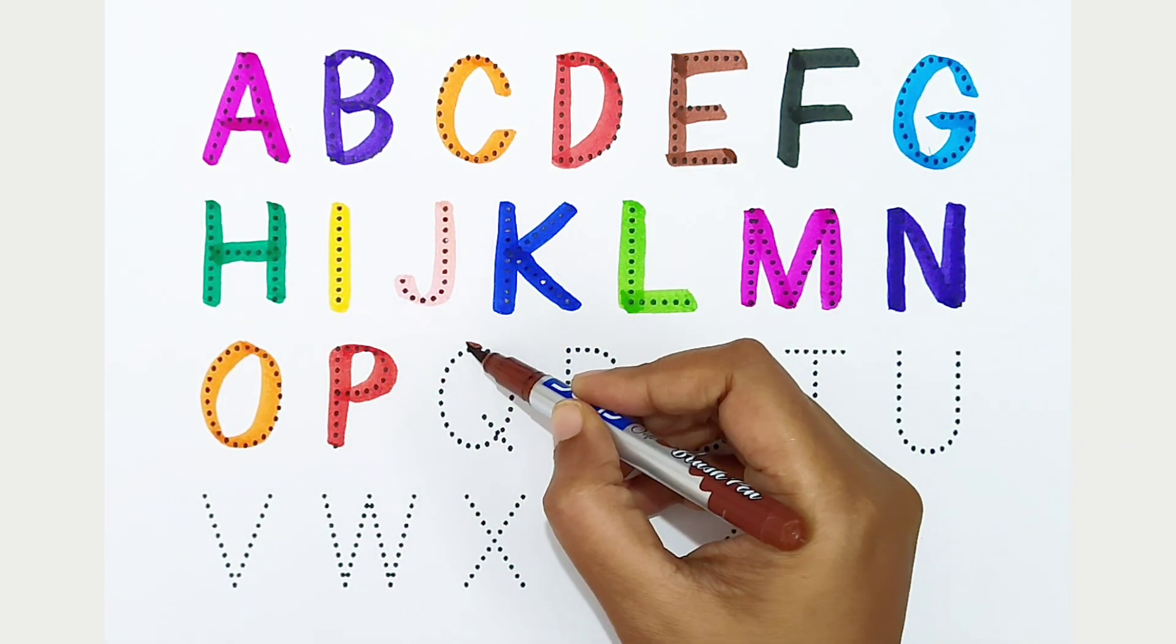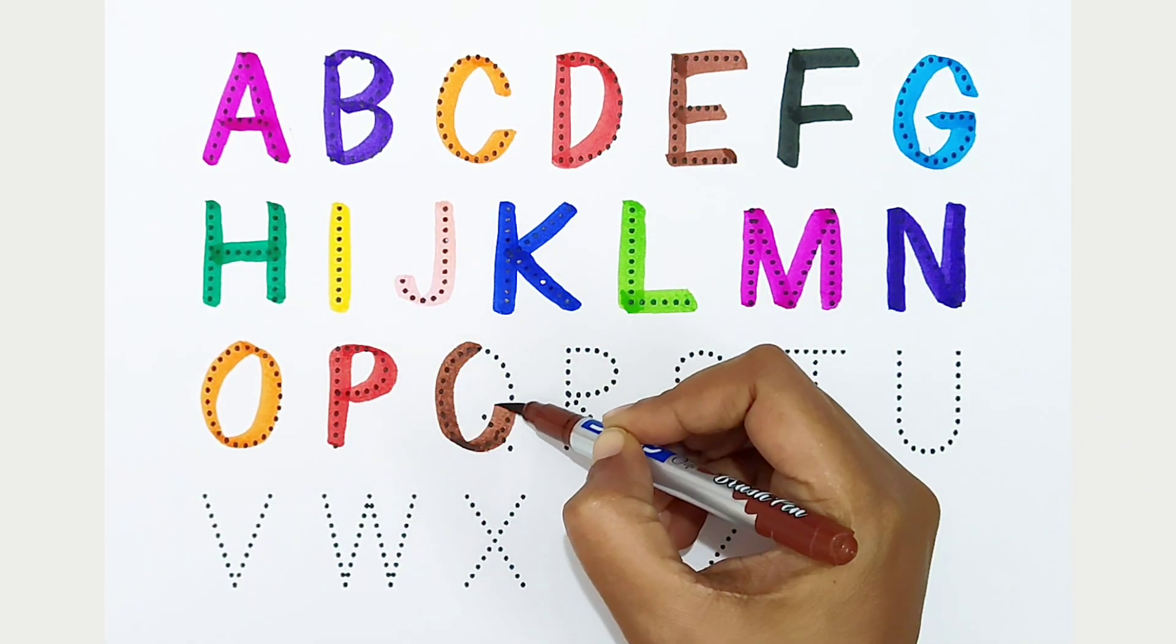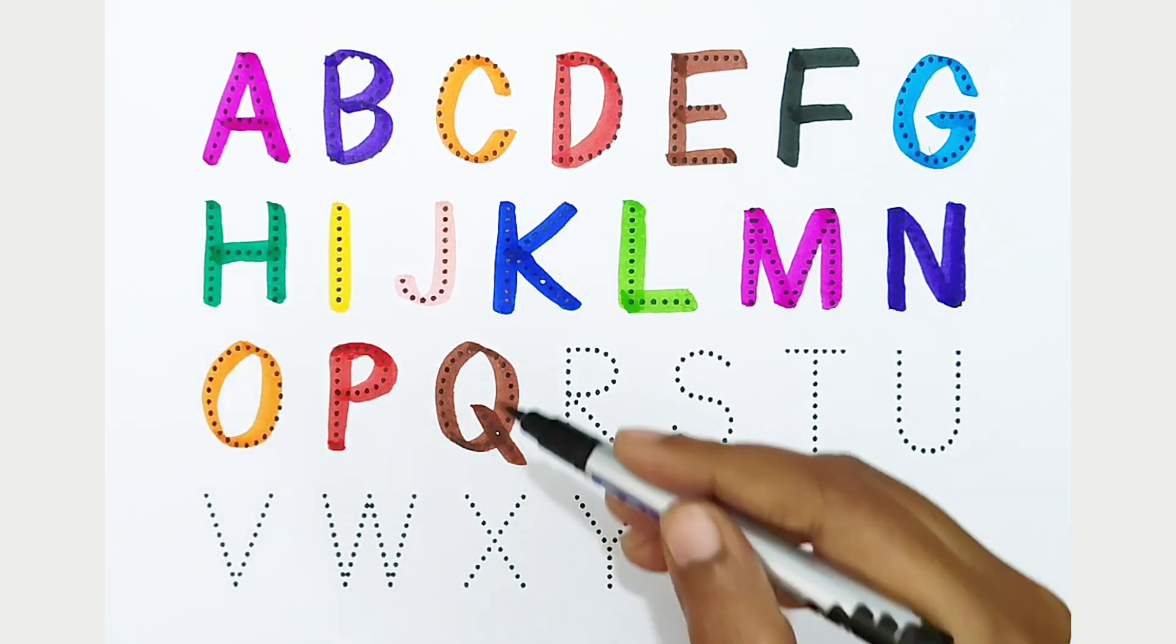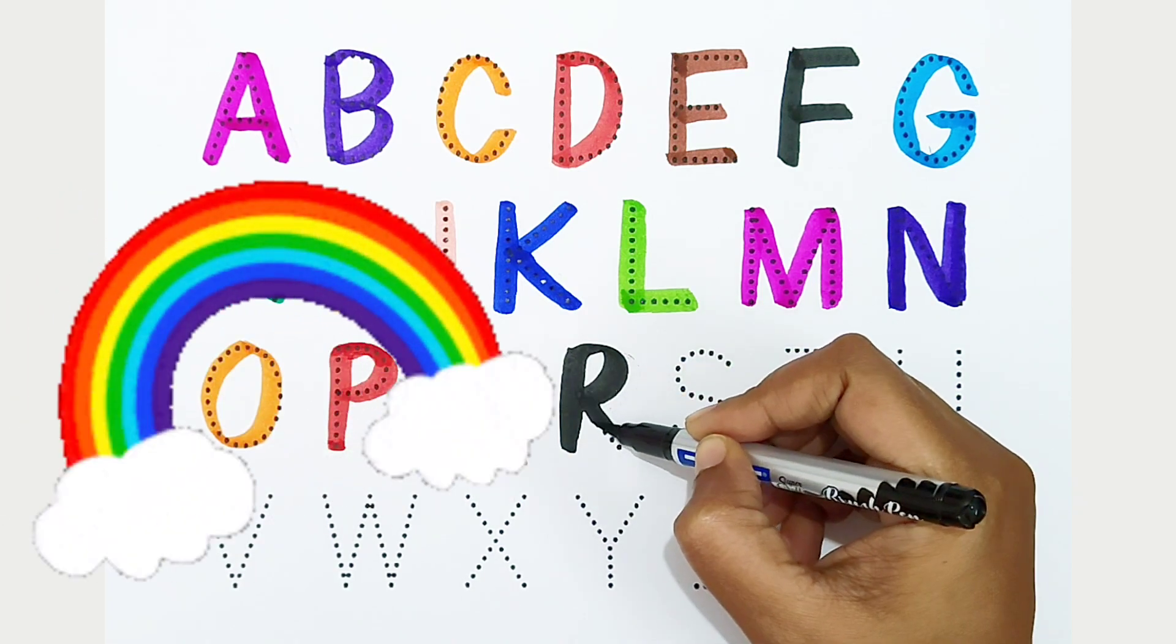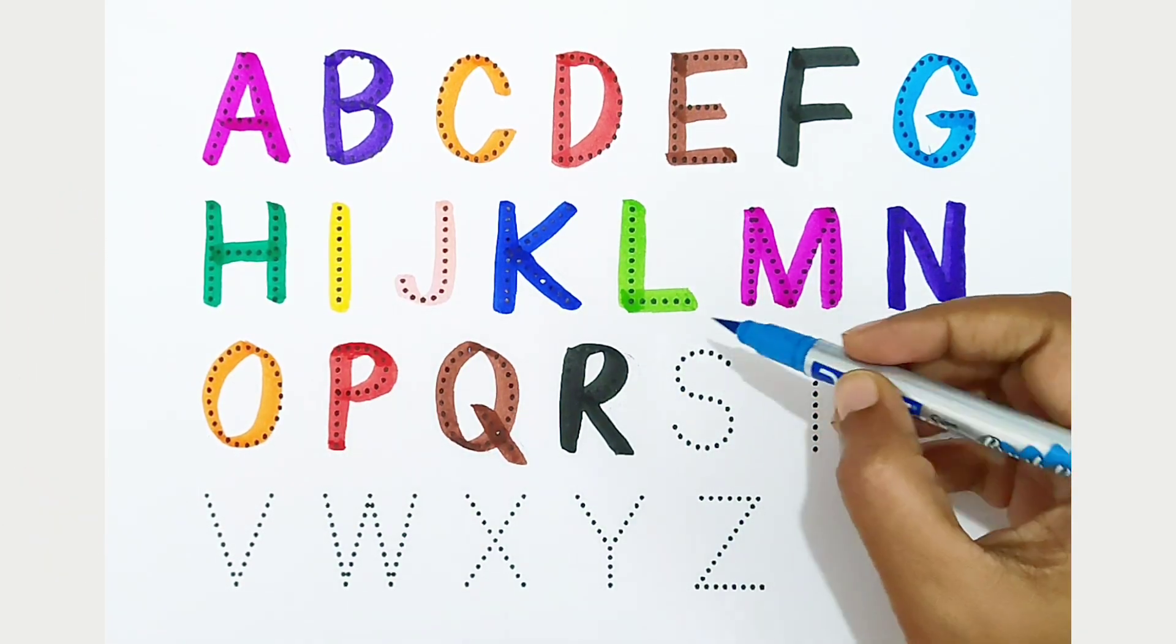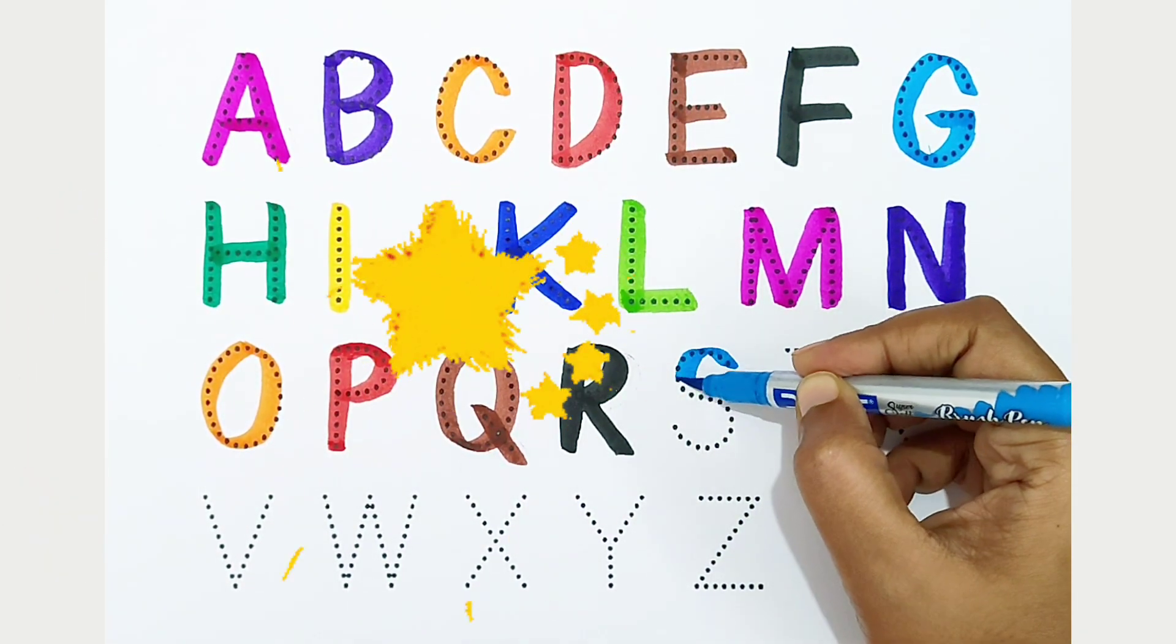Q, brown color, Q is for quilt. R, black color, R is for rainbow. S, light blue color, S is for star.